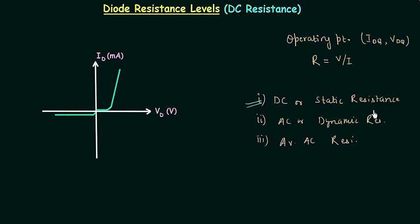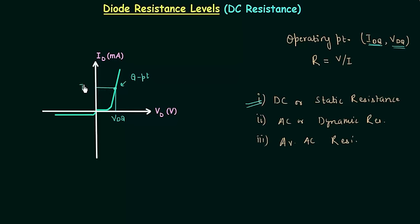When we apply a DC voltage to a circuit having a semiconductor diode, the operating point will not change with time because IDQ and VDQ will not change in case of DC input. We can easily calculate the diode resistance by finding the corresponding diode current and diode voltage. If this is the VI characteristics of the diode and this point is the Q point, the operating point, with corresponding diode voltage VDQ and diode current IDQ, then the diode resistance is obtained by the equation Rd equals VDQ divided by IDQ.